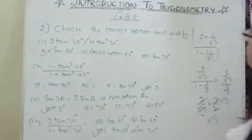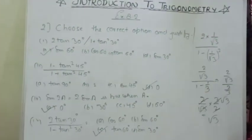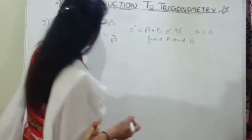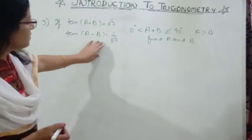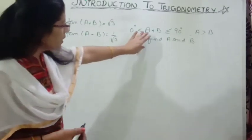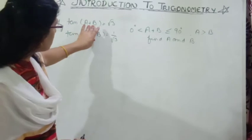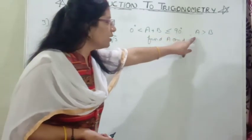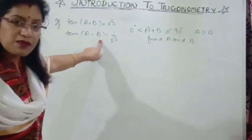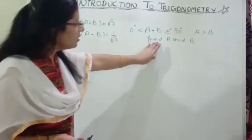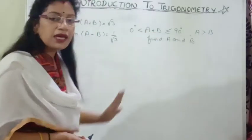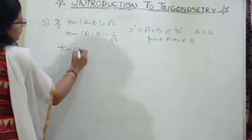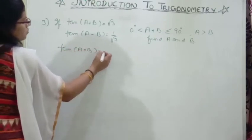Let us start question number 3. You are given: tan(A+B) = √3 and tan(A−B) = 1/√3, where A+B is greater than 0° and less than 90°, and A is greater than B. Find A and B. First, take tan(A+B) = √3.